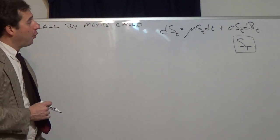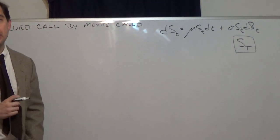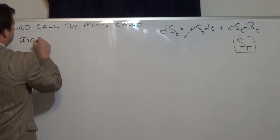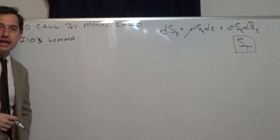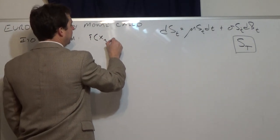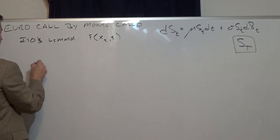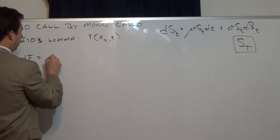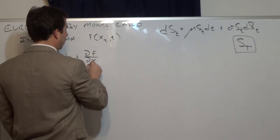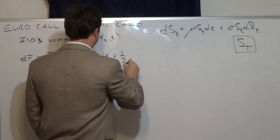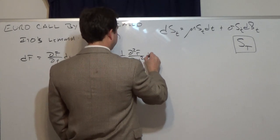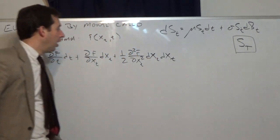Given this assumption, the way we can get the stock price at time T is through an application of Ito's lemma. Informally, I can write Ito's lemma as: if f is a function of a stochastic process x_t and t, then df equals the partial derivative of f with respect to t, dt, plus the partial derivative of f with respect to x_t, dx_t, plus one-half the second derivative of f with respect to x_t, dx_t dx_t.